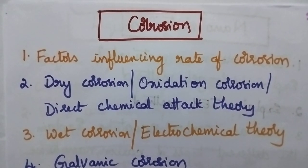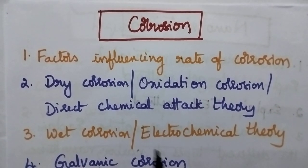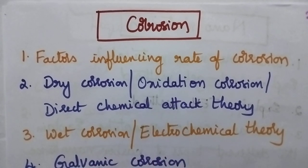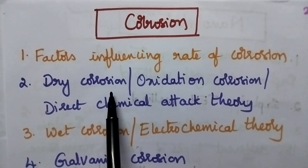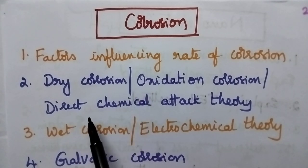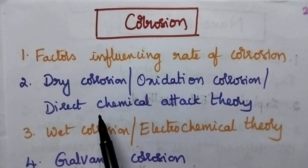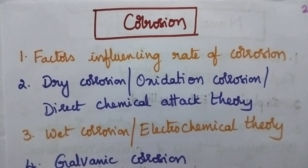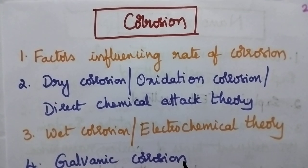Moving to corrosion, it includes factors influencing rate of corrosion, dry corrosion which is also known as oxidation corrosion and direct chemical attack theory. Wet corrosion, wet corrosion which is also known as electrochemical theory,